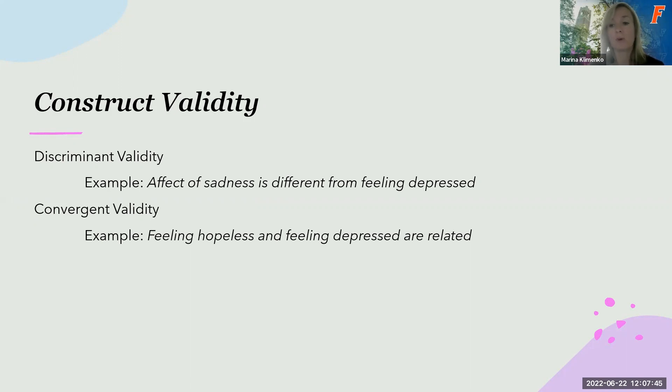For example, suppose a researcher developed an instrument to measure the affect of sadness. Sadness is different from feeling depressed. And so the scores on the sadness instrument should be distinctly different from the scores on a depression test. If you give the instrument measuring sadness to your subjects, to your respondents, and then you also measure depression using a different scale, the two scales should differ because sadness should be distinct, at least based on theory, from depression. The scores should be distinctly different.